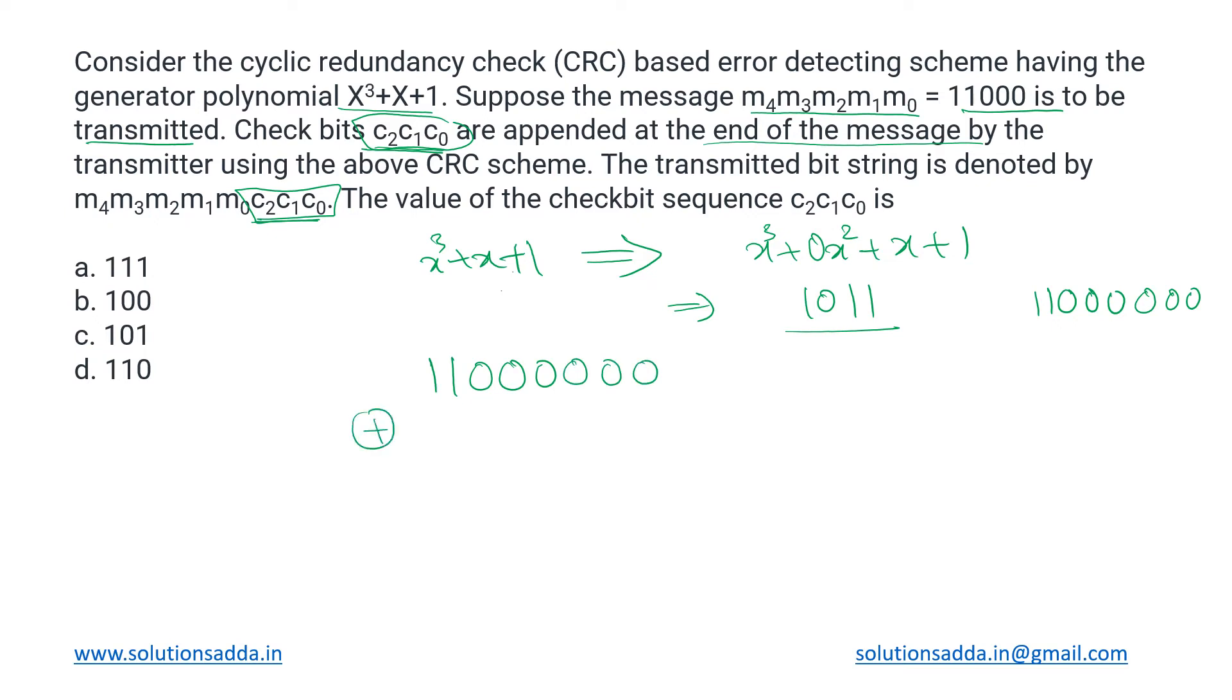After that we perform this XOR operation using the generator which we have got, that is 1011. XORing gives us: one and one will give us zero, so this is 111 followed by four zeros.